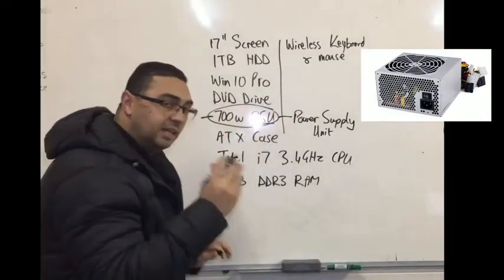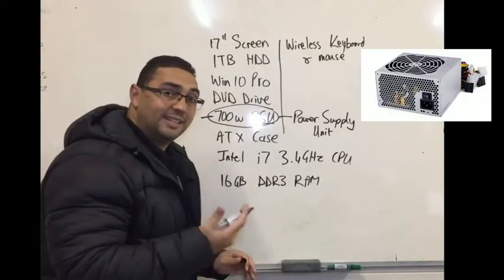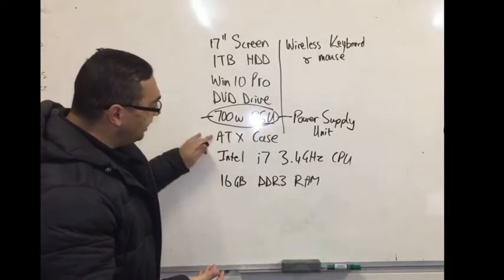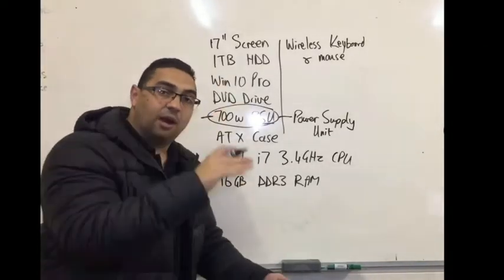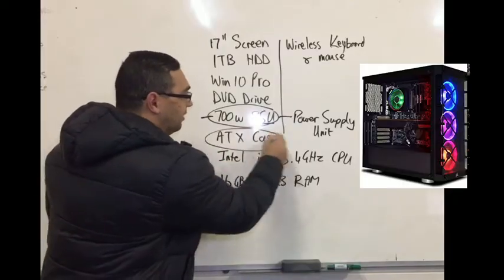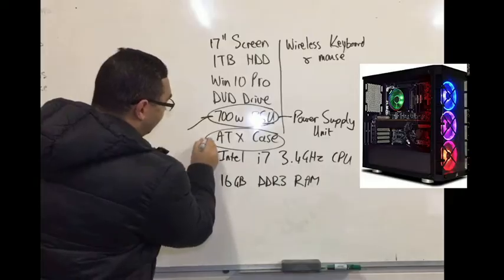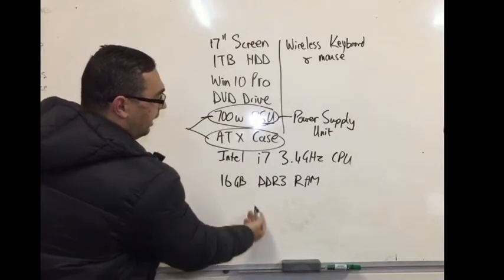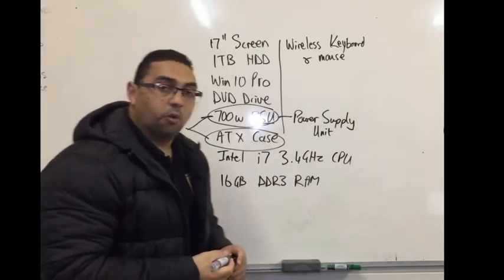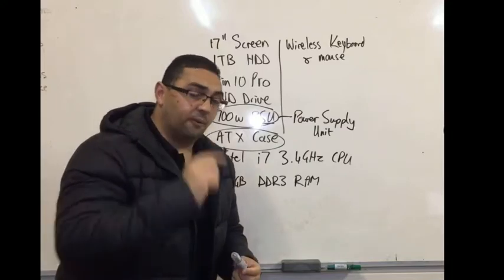So this is one of the factors that immediately is going to tell us that we're dealing with a desktop machine. An ATX case, this is the tower unit. Again, this is going to tell us that it is a desktop. So this is one factor, this is another one, and these two are as per normal as you would find.